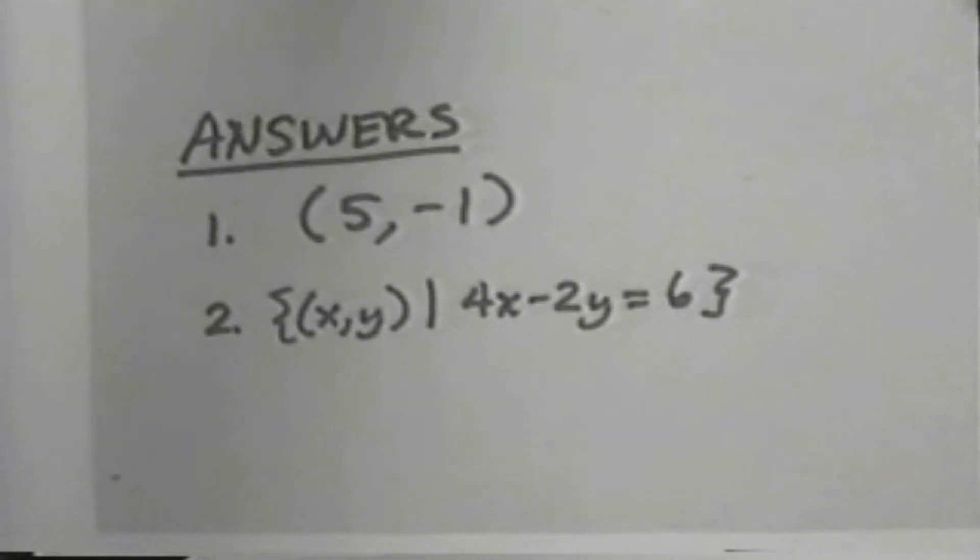Your answer should be, for exercise 1, the ordered pair 5, negative 1. Be sure that is written in parentheses.